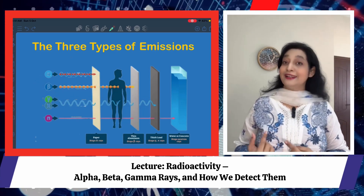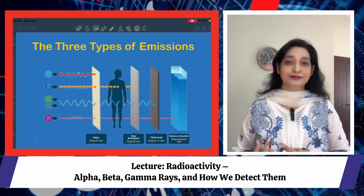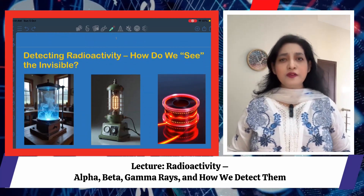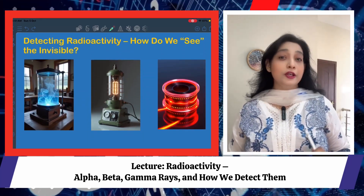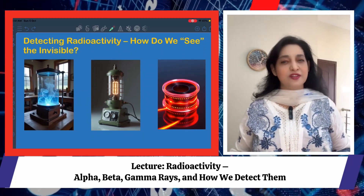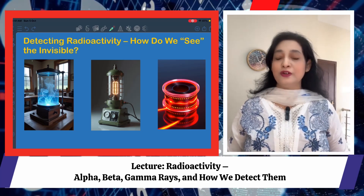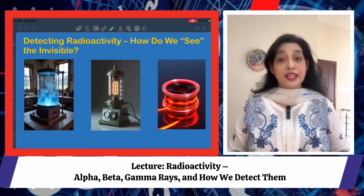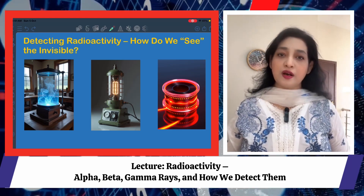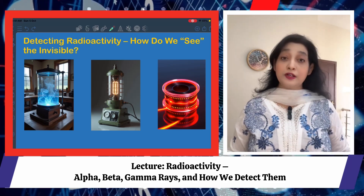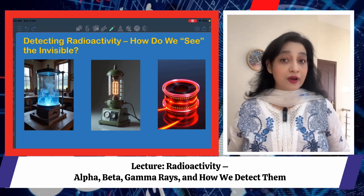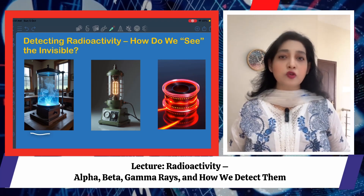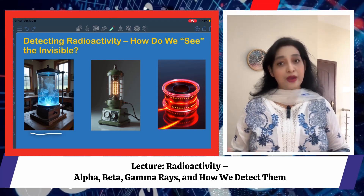Gamma radiation is reduced by thick lead or concrete. I am showing this in the diagram. Now, detecting radioactivity — how do we see this invisible radioactive stuff? It does not glow like in movies — no green glow, sorry. We need clever detectors to count the emissions. The three main detectors are: number one, the Geiger-Müller tube and counter; number two, the cloud chamber by Wilson; and number three, the photographic film.